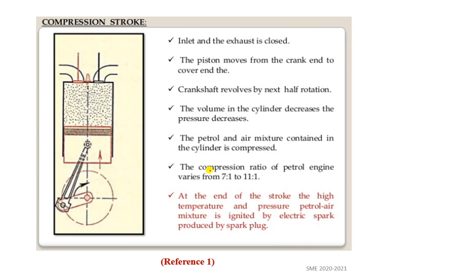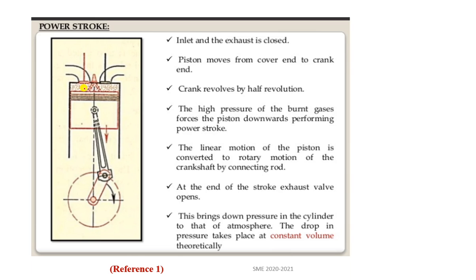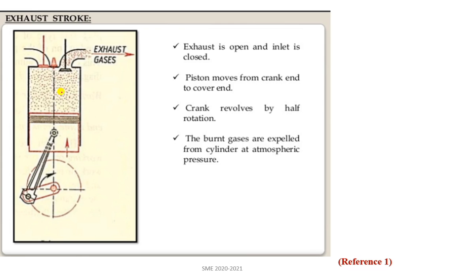In the compression stroke, both valves are closed and the charge is compressed. The compression ratio plays an important role here — it is lower in petrol engines and higher in diesel engines. Compression ratio is the total volume divided by the clearance volume. In the power stroke, combustible gases force the piston from TDC to BDC, giving work output. In the exhaust stroke, the piston moves from BDC to TDC and combusted gases leave through the exhaust valve.